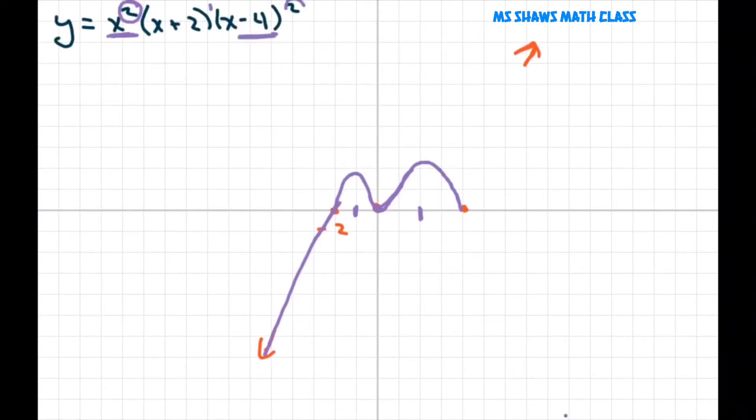As we go to 4, the multiplicity is also an even number. So that means we touch the x-axis, but then we make a U-turn and come back. So there's your graph. And this was 4 and this was 0. Let's see how many turning points we had. We had 1, 2, 3, 4 turning points.